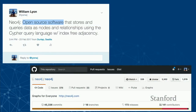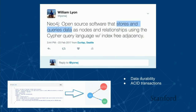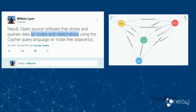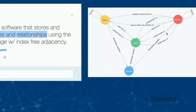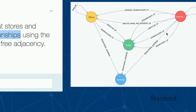Let's dissect that a little bit. First of all, Neo4j is open source — that means all the code is on GitHub, you can build it from source. Neo4j is primarily a transactional database focused on data durability, so when a transaction is committed, that data is safe. Neo4j allows us to store and query our data as nodes and relationships.